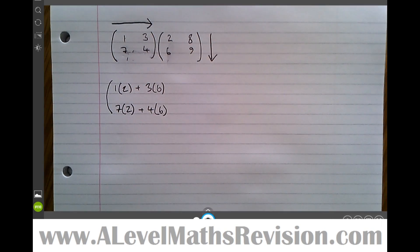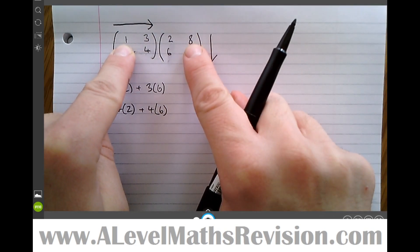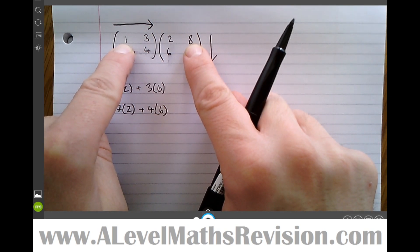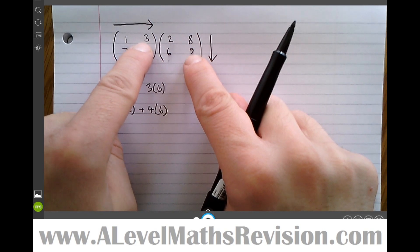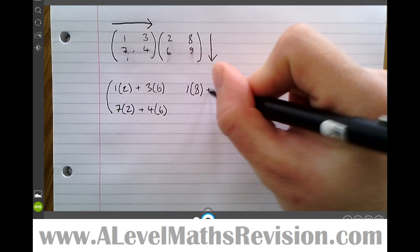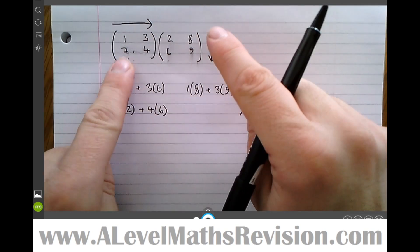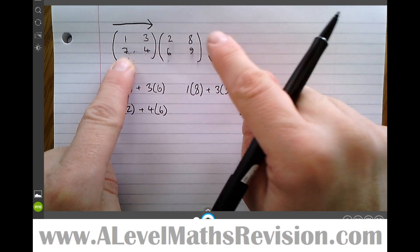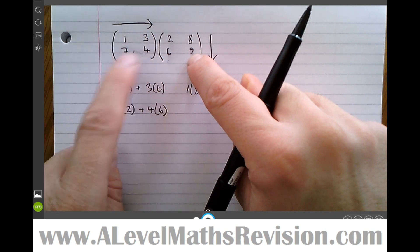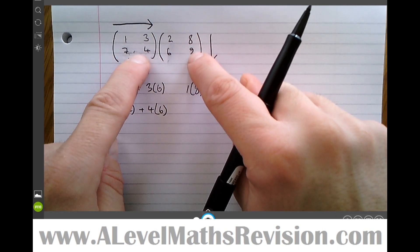Now starting at the top of the first and the right of the second — top and right makes the top-right entry: one times eight plus three times nine. Then starting at the bottom of the first and the right of the second — bottom and right makes the bottom-right entry: seven times eight plus four times nine.